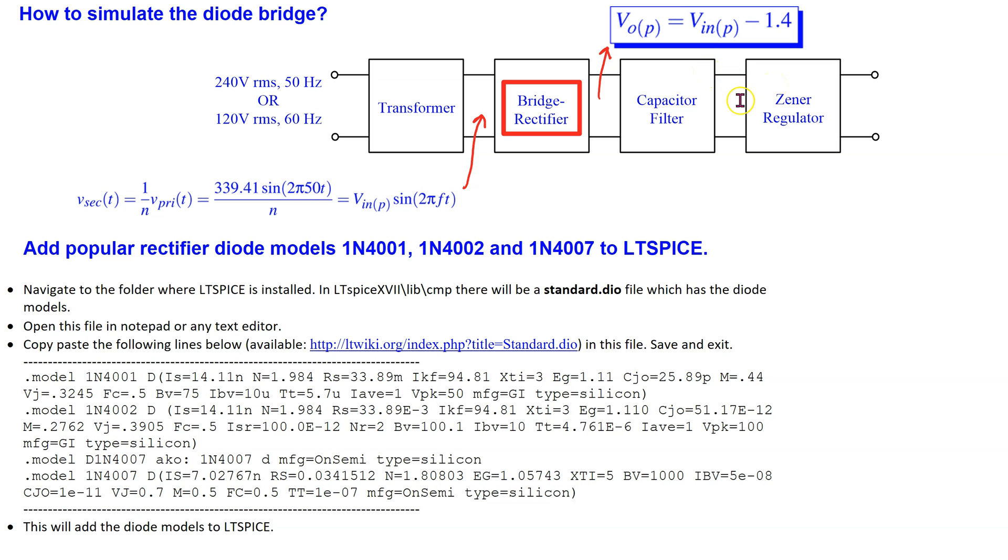The popular rectifier diode models, such as 1N4002, are not available by default in LTSpice. However, they can be easily added to LTSpice following the instructions shown here. These instructions are discussed in detail in a different video in this playlist. The link is included at the end of this video. Please pause the video now if you wish to follow and read these instructions in more detail.